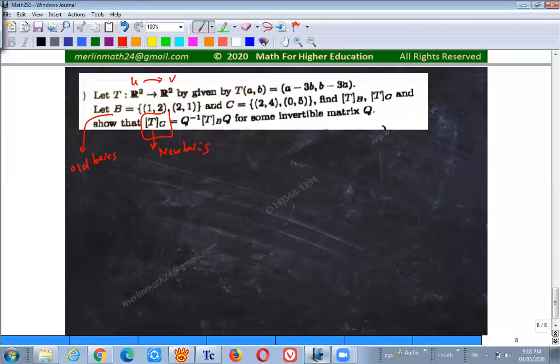Because the relation is true with the Q inverse TBQ, okay, Q inverse, the Q is my change in coordinate, right, of the bases. Make sense?